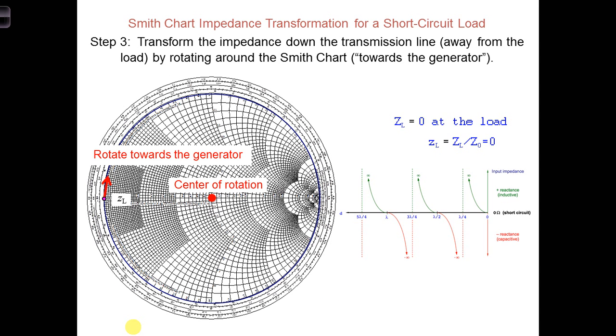What we're observing here on the Smith chart agrees with the impedance solution we calculated in transmission line notes 9, shown again here on the right side of the screen.